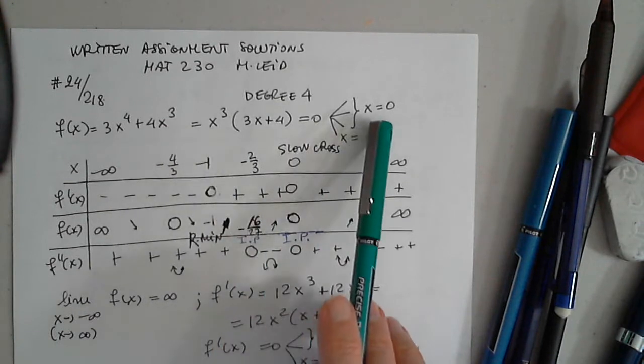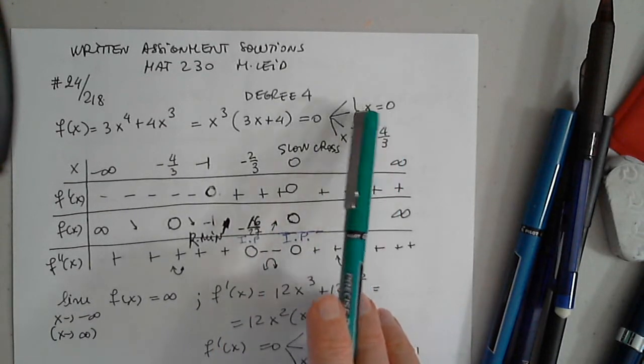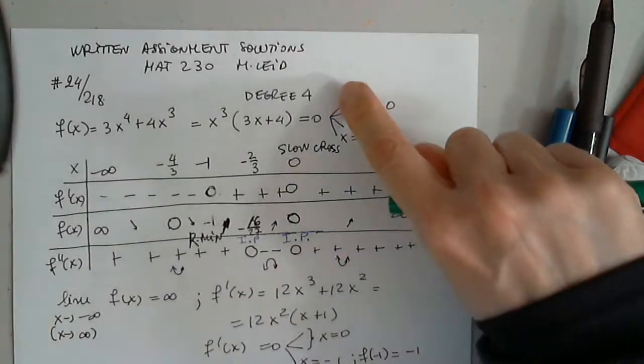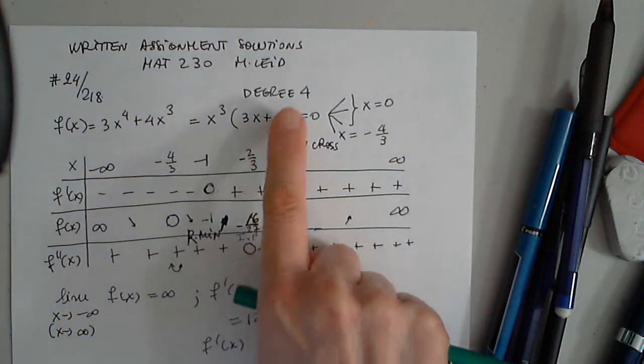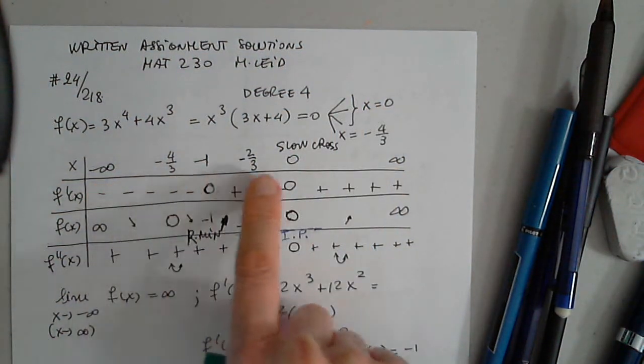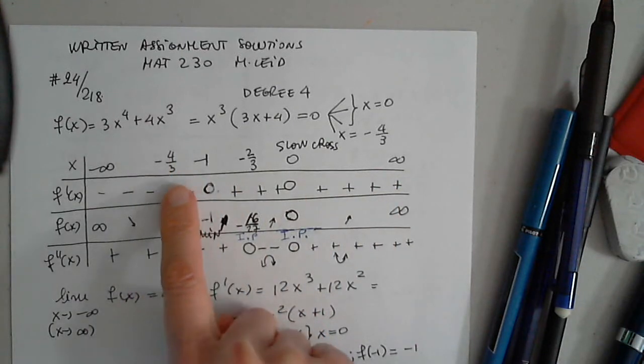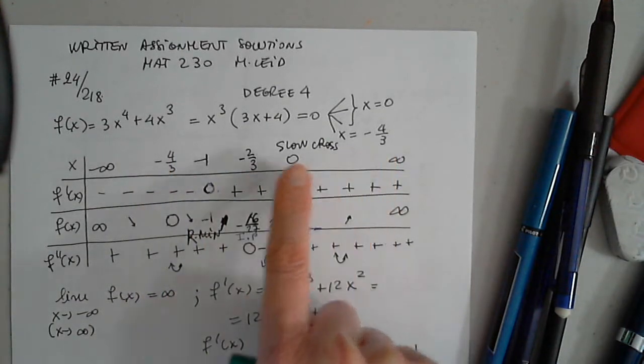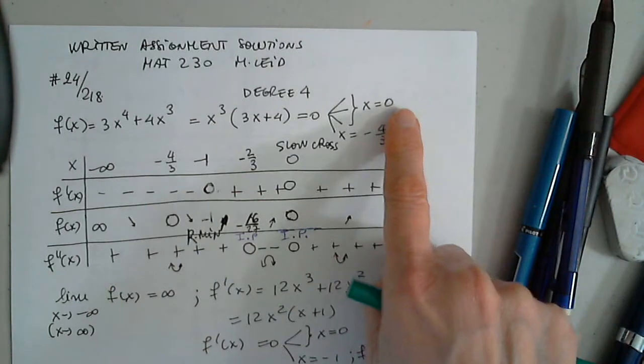And then I have three solutions, x equals 0, because I have to have a total of 4, and one solution negative 4 over 3. The domain is all the real numbers for a polynomial function. I put negative four-thirds in the table, and I also put 0.